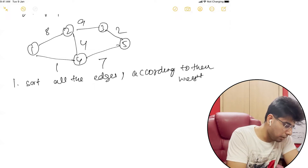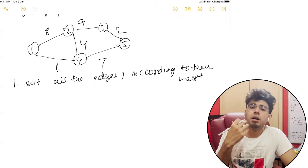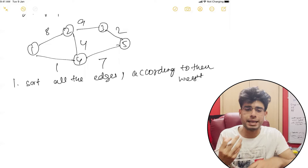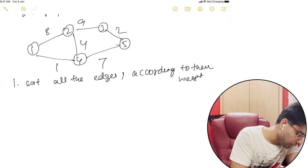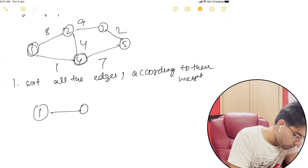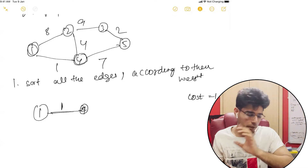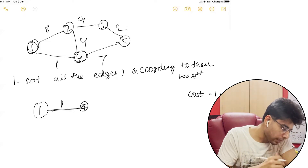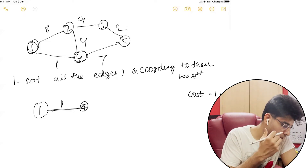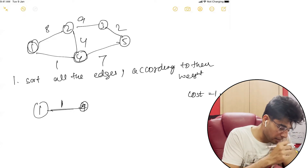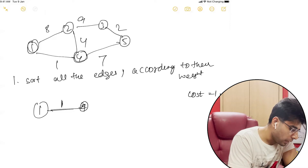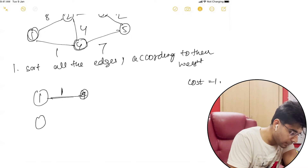What we're trying to do is check: what is the minimum weighted edge? That is between nodes 1 and 4. So we will take this edge, and our cost is equal to 1. Now, what is the next minimum weighted edge? That is between nodes 3 and 5.